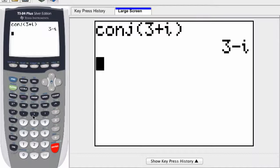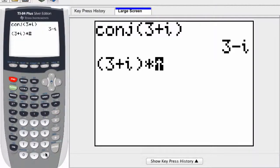So if I want to test this to see that it's correct, I can type in 3 plus i, and multiply that by the answer. Because a number and its conjugate, when you multiply them, a complex number and its conjugate, you always get a real number. And we do here, we get a real number of 10.